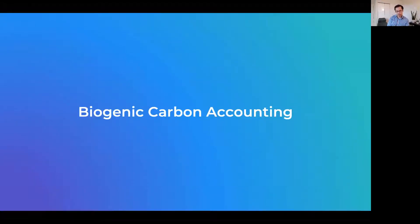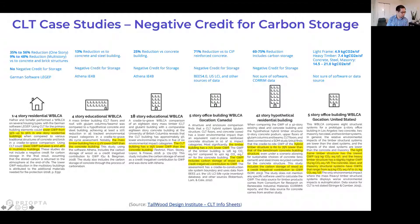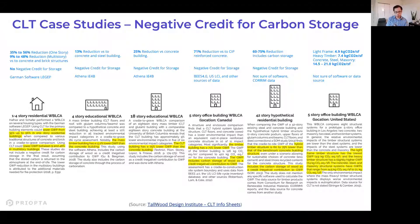You may have seen whole building LCA case studies that compare wood buildings to concrete or steel buildings, with varying percentages of reduction. This is a sampling of whole building LCA case studies included in research by the Tallwood Design Institute CLT info sheets. There are varying percentage reductions, but it's important to look at whether those results account for a negative credit for carbon stored in the wood. Different LCA software tools have made different assumptions around this.